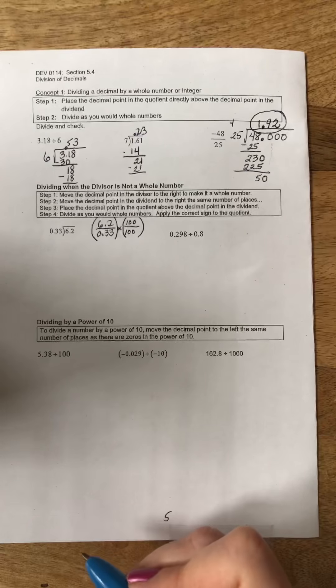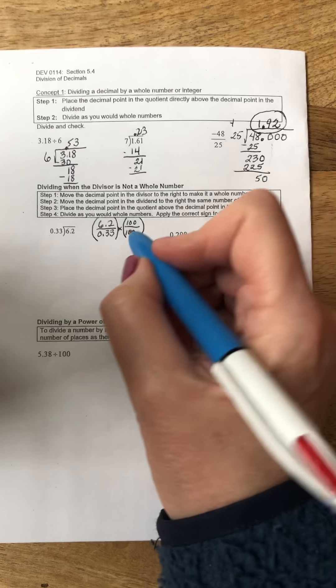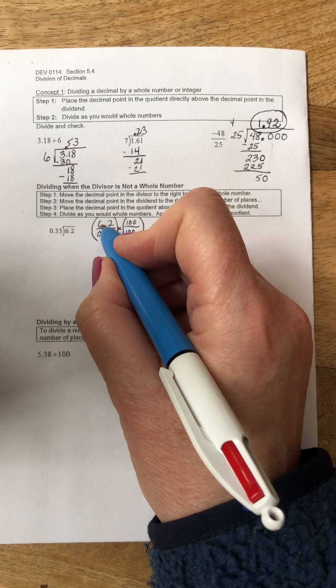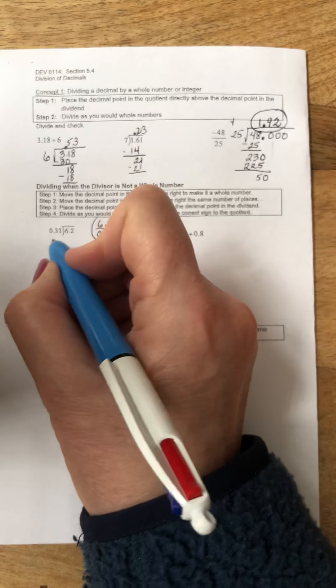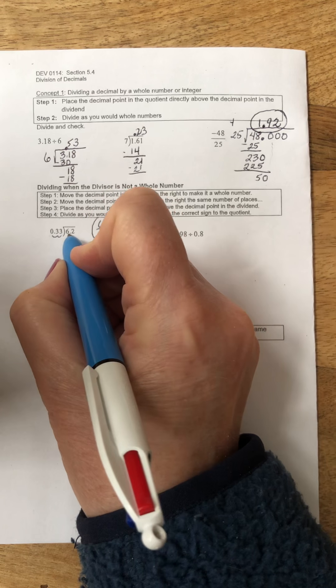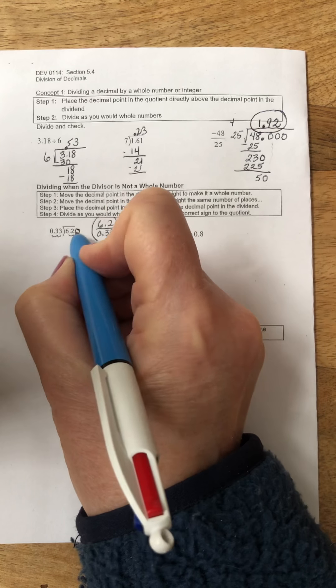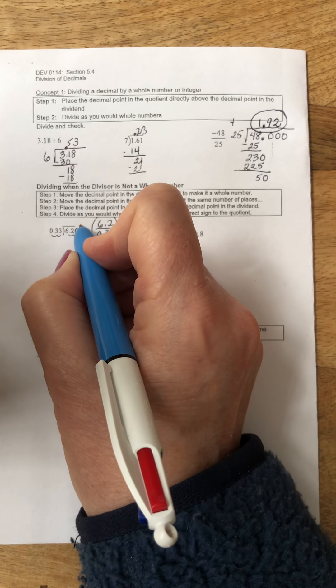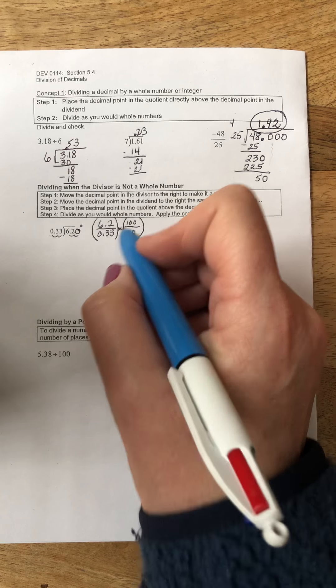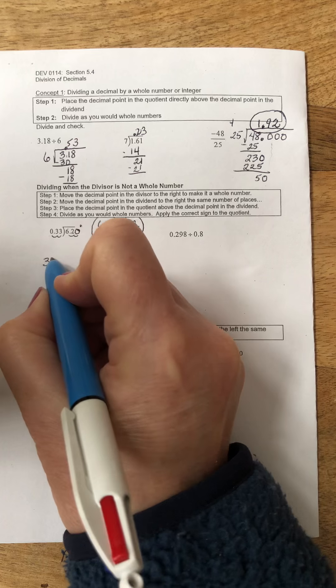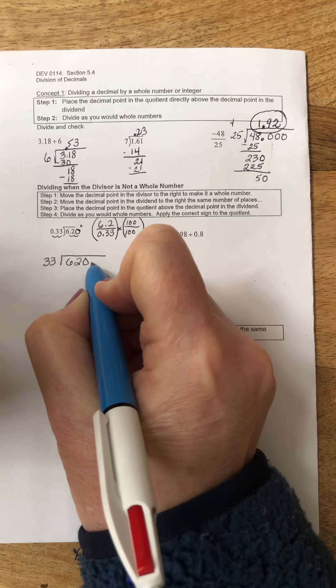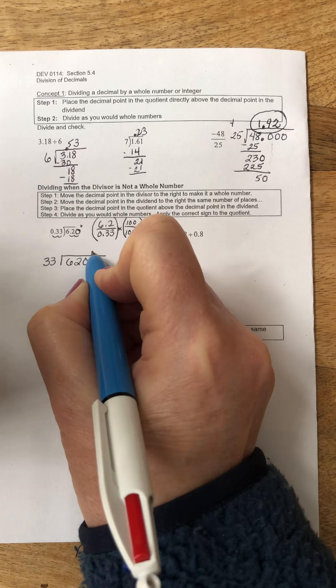If I'm going to multiply by 100, I have to do the same thing in the numerator so that I'm multiplying the entire fraction by 1 so as not to change its value. If we multiply 0.33 by 100, we also have to multiply 6.2 times 100. As long as I move the decimal point the same number of places in both the dividend and divisor, then I'm not changing any values. This is the same as dividing 33 into 620.